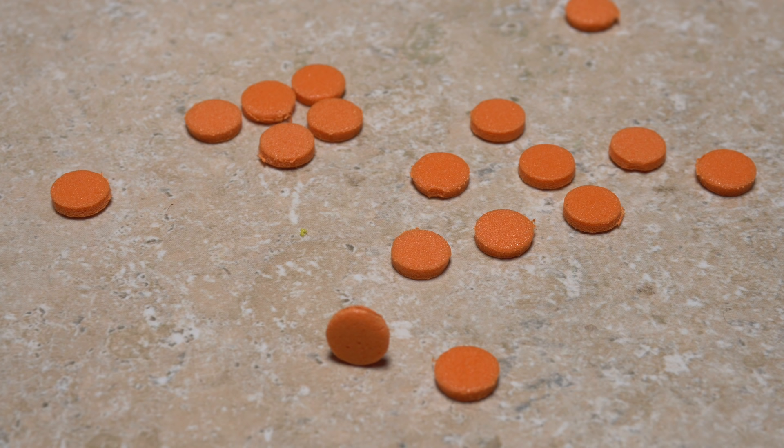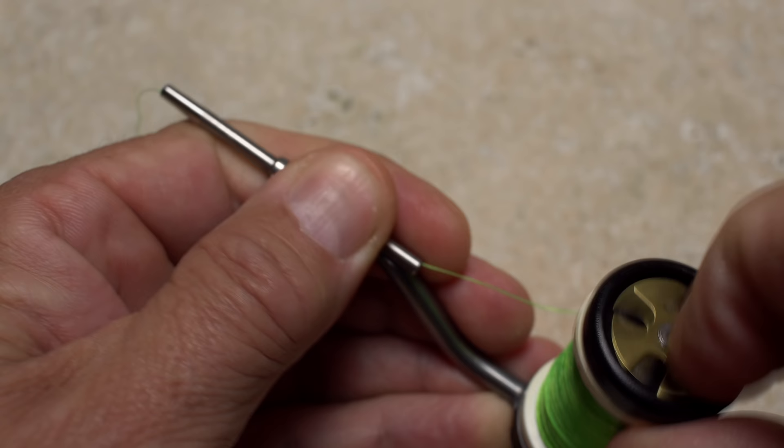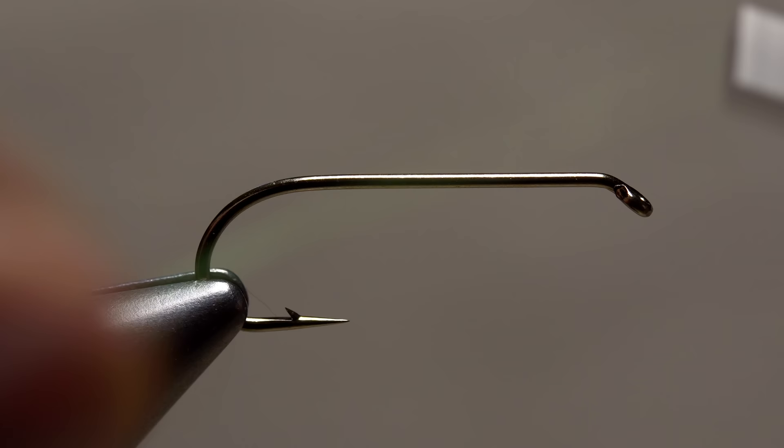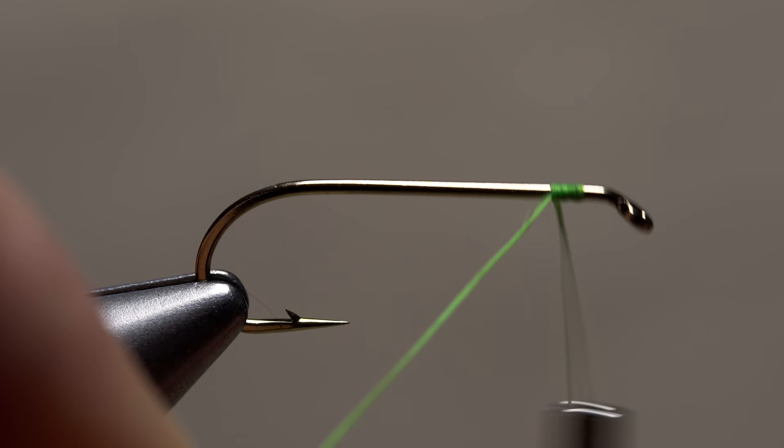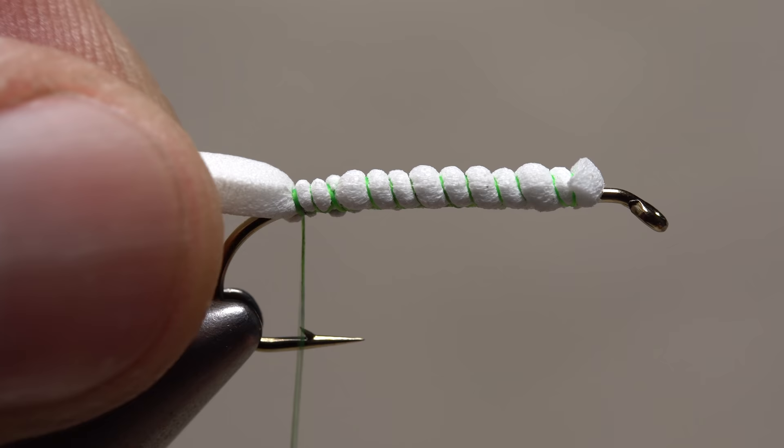Attaching somewhat slick foam to a slippery metal hook can be a bit tricky. I like to start with a heavier thread such as UTC 140 denier. It's both strong and doesn't seem to cut into the foam as much as some other threads. I'll add a fair bit of tension to my bobbin in order to make nice tight wraps. To help prevent slippage, it's always a good idea to start out with a substantial thread base on your hook.